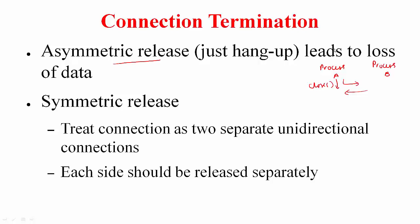This is no good. This leads to loss of data — not only data that is in transit, but also if B still has some data to send, if you close the connection you are going to miss out on that data. So what is desired is the symmetric release, where you treat each connection as two separate unidirectional connections and each side has to be released separately. When process A says close, it will not be sending any more data, but it will still listen to data coming from the B side.